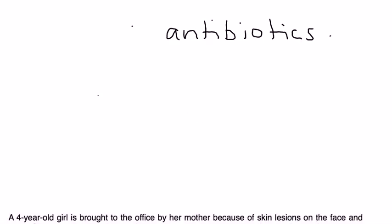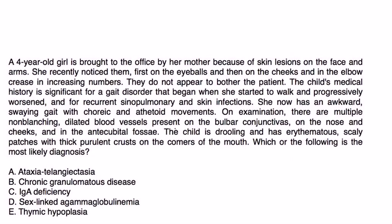Let's look at some clinical vignettes. A four-year-old girl is brought to the office by her mother because of skin lesions on the face and arms. She noticed them first on the eyeballs and then on the cheeks and the elbow crease. They do not appear to bother the patient. The child's medical history is significant for a gait disorder that began when she started to walk and progressively worsened and for recurrent sinopulmonary and skin infections. She now has an awkward swaying gait with choric and athetoid movements. On exam, there are multiple non-blanching dilated blood vessels present on the bulbar conjunctivas, on the nose, and on the cheeks and antecubital fossa.